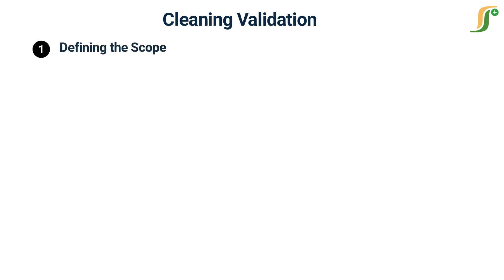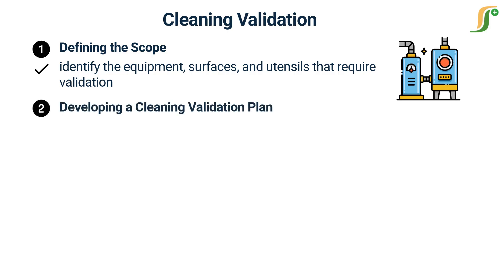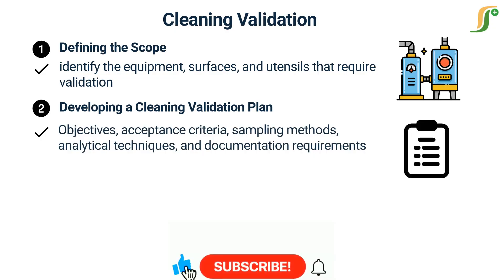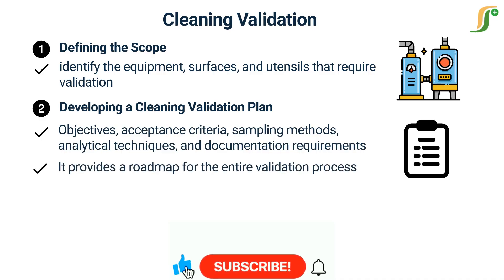Step 1: Defining the scope. The first step is to identify the equipment, surfaces, and utensils that require validation. This helps us focus our efforts and resources effectively. Step 2: Developing a cleaning validation plan. A comprehensive plan outlines our objectives, acceptance criteria, sampling methods, analytical techniques, and documentation requirements. It provides a roadmap for the entire validation process.